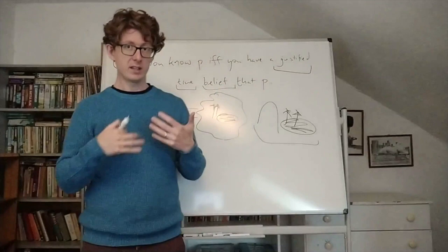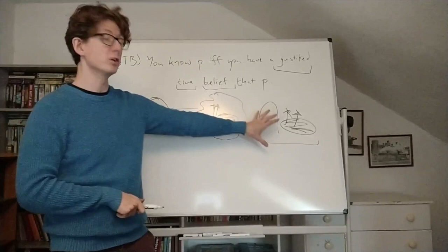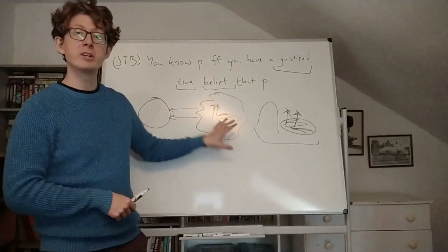So what's missing, Gettier points out to us, in cases like these is this kind of reliable connection between the truth of the matter and your beliefs. And surprisingly, that connection can be missing even when your belief is justified.